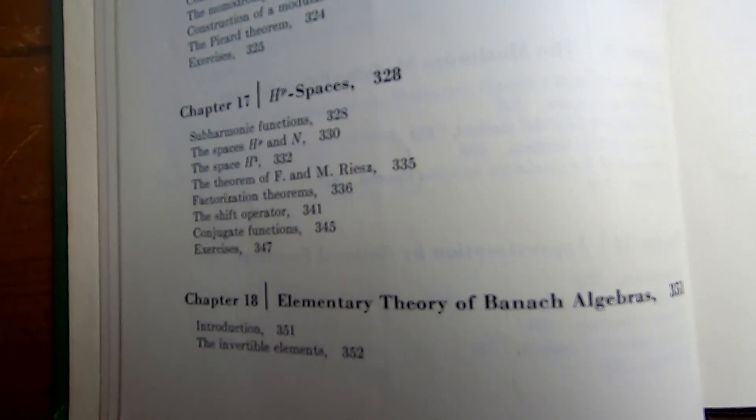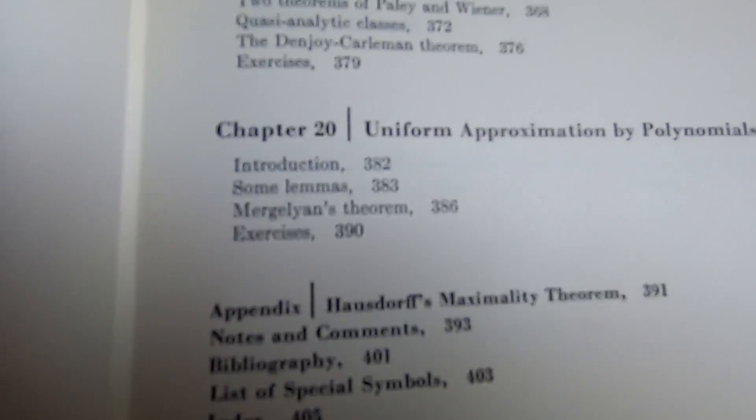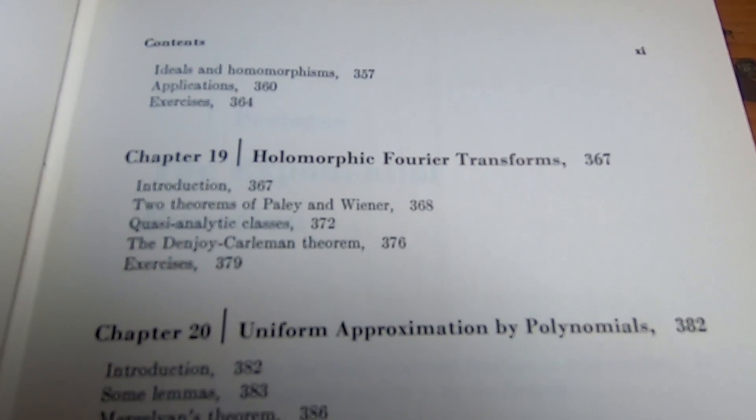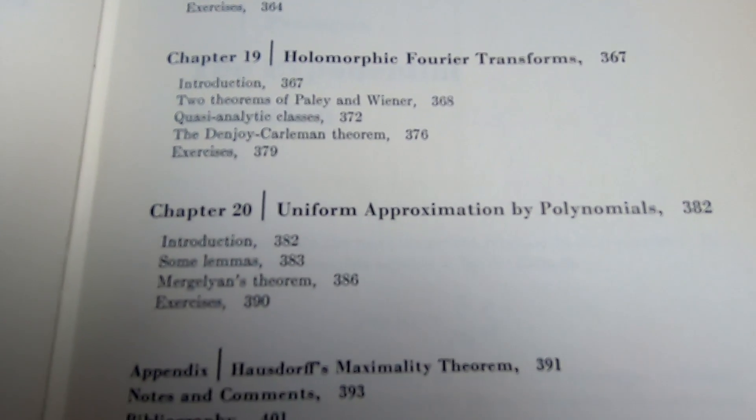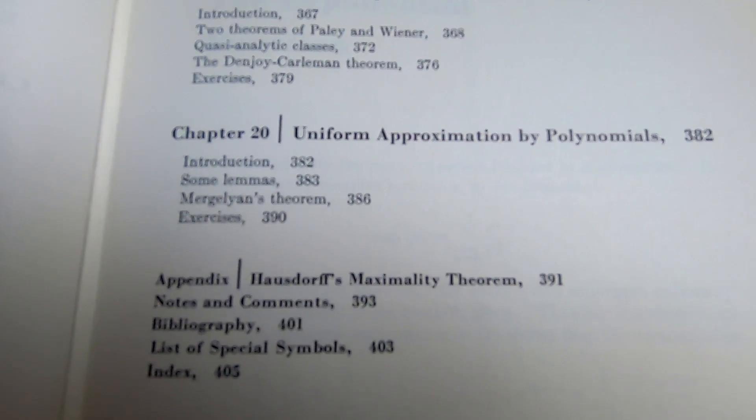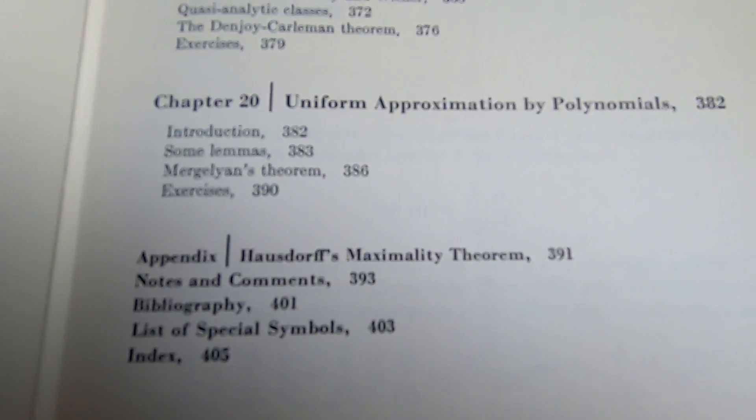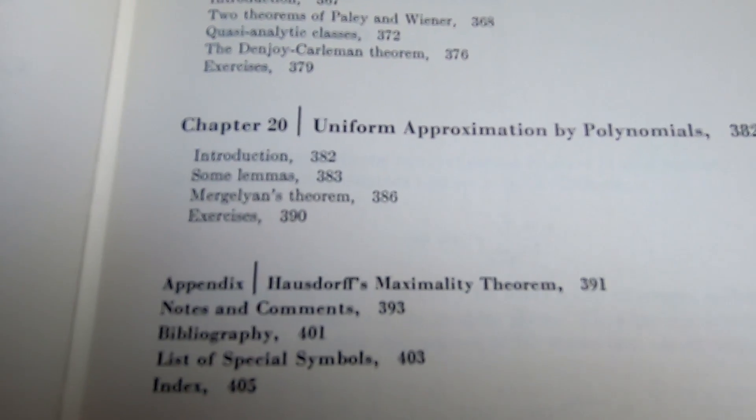HP spaces. Elementary theory of Banach algebras. Holomorphic Fourier transforms. And he finishes with uniform approximation by polynomials. And there's an appendix on Hausdorff's maximality theorem. Good old Felix. Let's take a look further inside this book.